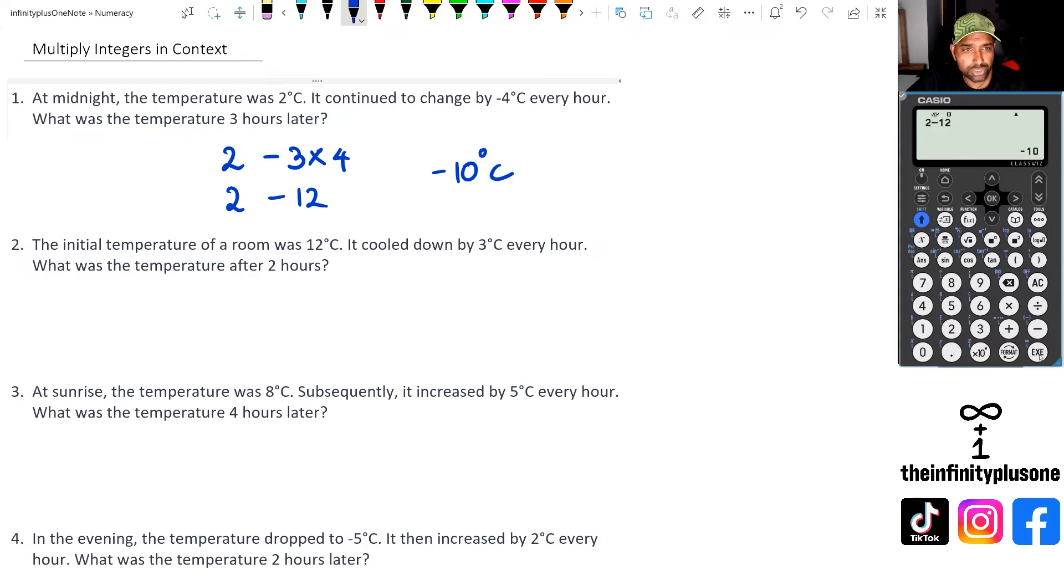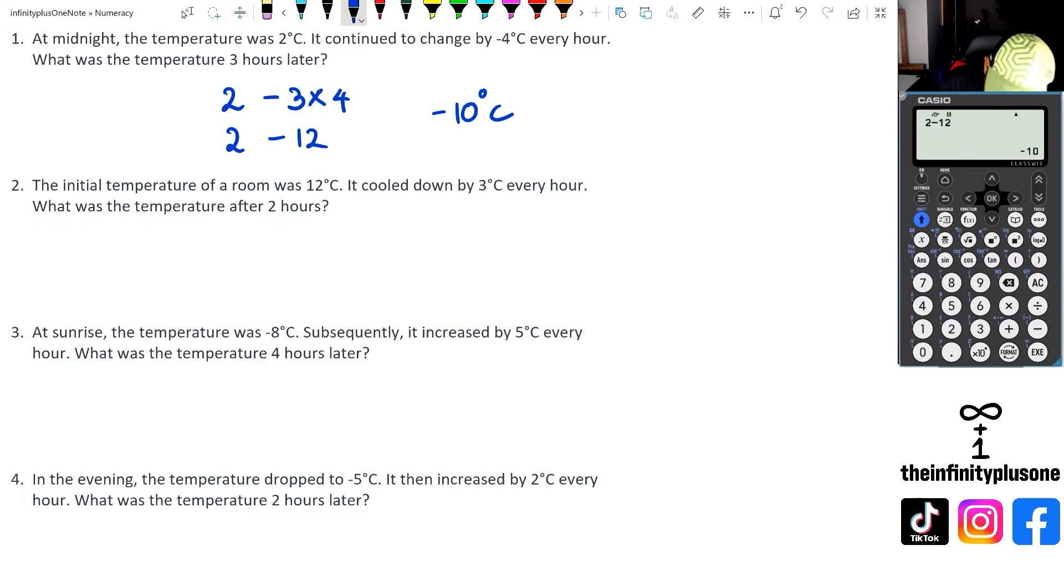Looking at question 2, we've got 12 degrees. It cooled down by 3 degrees every hour. What was the temperature after two hours? So what we've got here is we've got 12 degrees and it's cooled down by 3 degrees.